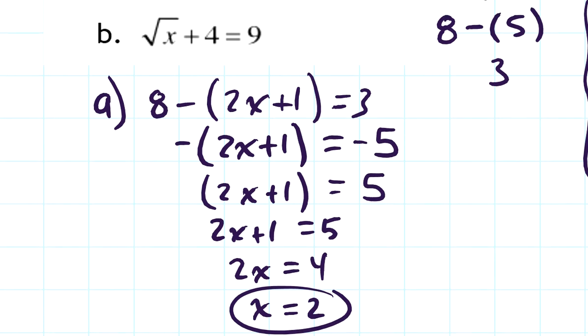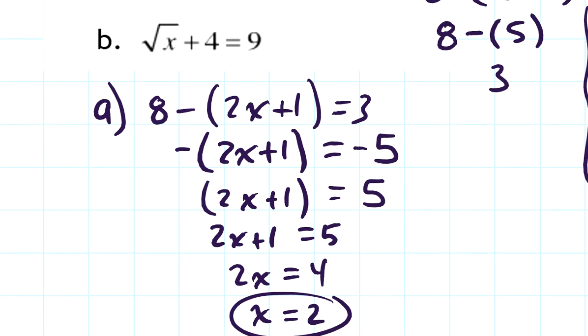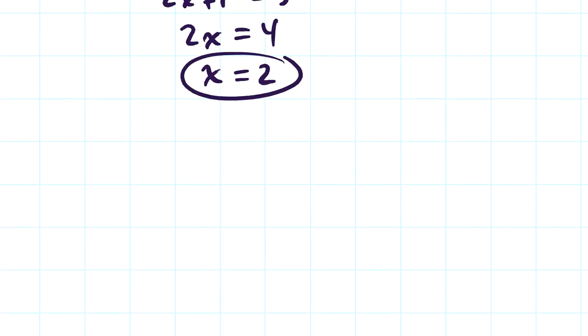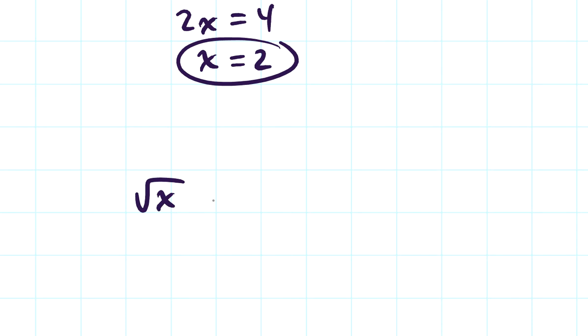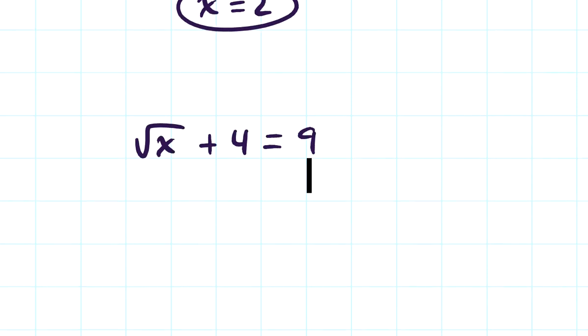Let's take a look at the next equation. It's the square root of x plus 4 equals 9. So let me write this down here. The square root of x plus 4 equals 9. I can subtract 4 from both sides, and that gives me that the square root of x equals 5.